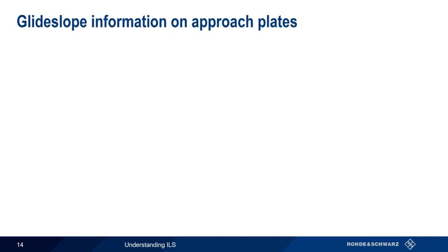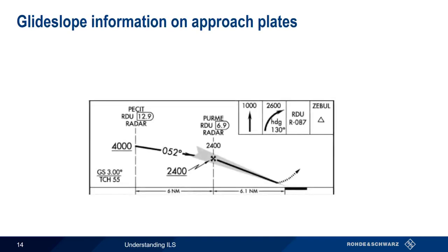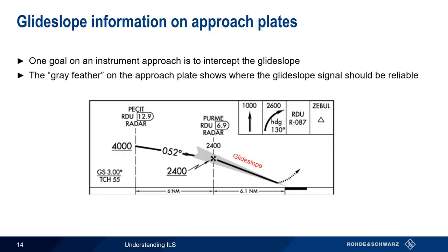Glide slope information can also be found on approach plates. Typically, one goal on an instrument approach is to intercept the glide slope. The gray feather on the approach plate shows roughly where the glide slope signal should be reliable. In this approach, the glide slope angle is the standard 3 degrees. The glide slope is intercepted at an altitude of about 2400 feet at a distance of 6.1 nautical miles from the runway threshold. And the threshold crossing height is slightly higher than normal at 55 feet.